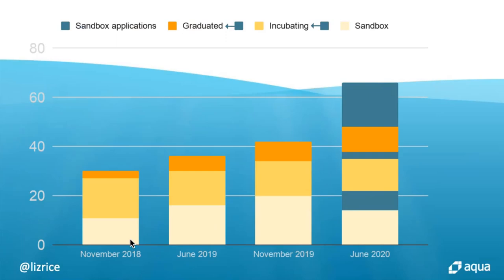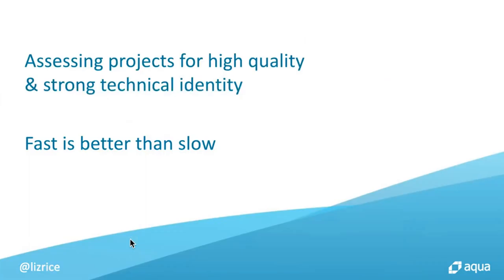In addition to the sandbox, we have projects increasingly wanting to move up between sandbox and incubation level. Right now about 40% of the number of projects wanting to be assessed makes up about 40% of the total number of projects on the to-do list. So there's a lot of stuff out there looking to be assessed in one way or another, and that is really hard to reconcile with this principle that fast is better than slow.